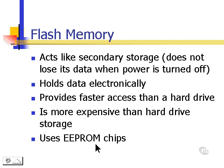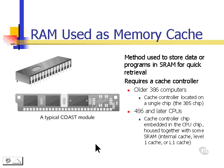Cache is another special kind of memory. Cache uses what's called SRAM, or static RAM, and requires a cache controller. On older 386 computers, the cache controller was located in a single chip called the 385 chip. But in newer computers — 486s and later — the cache controller chip is actually embedded into the CPU.